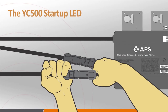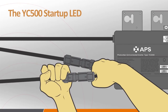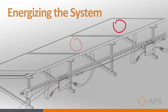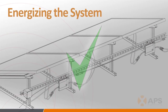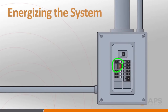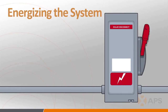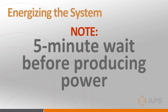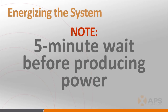With the PV modules and inverters in place and all connections thoroughly checked to make sure they're secure, you're ready to energize the system. First, turn on the AC circuit breaker associated with each microinverter AC branch. Next, turn on the main utility grid disconnect. As a safety precaution against potential islanding, the system will not start producing power for a full five minutes after it detects the presence of the grid.